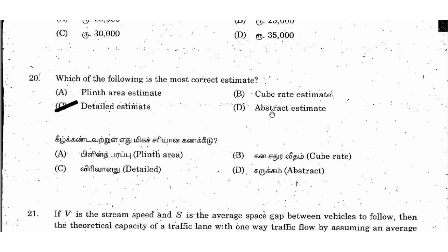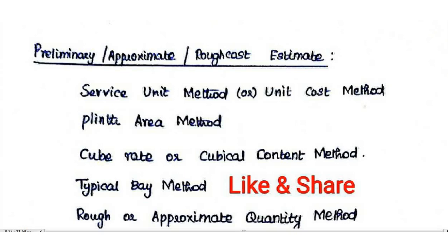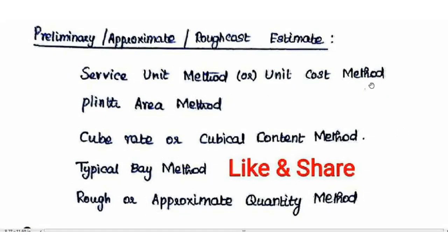The remaining options — plinth area estimate, cube rate estimate, and abstract estimate — are all approximate estimates, also called preliminary or rough cost estimates. The first approximate method is the Service Unit Method or Unit Cost Method. The next is the Plinth Area Method, which is based on a similar building in nearby construction, calculating cost per 1 m² of plinth area.